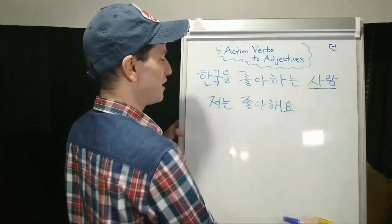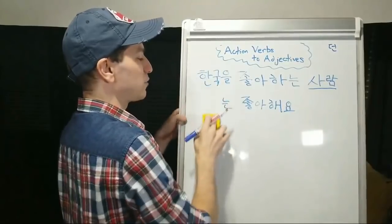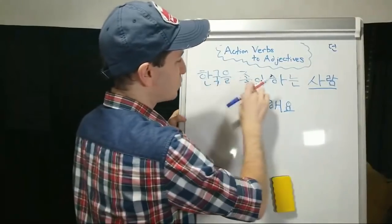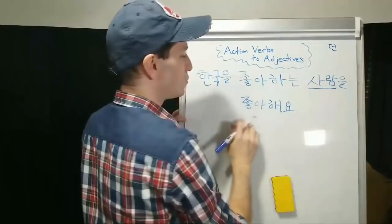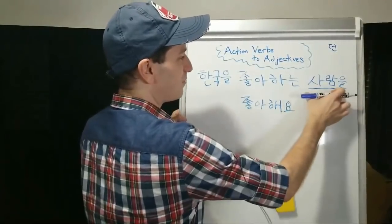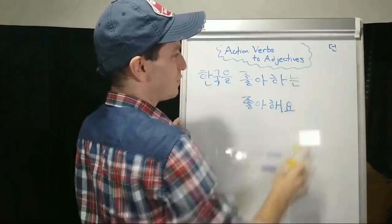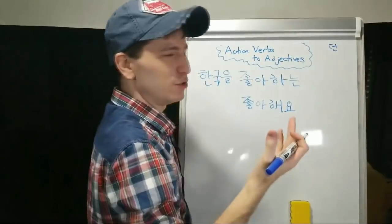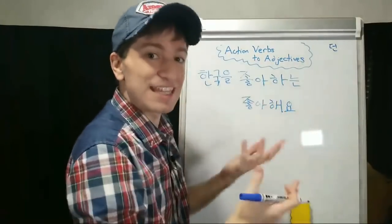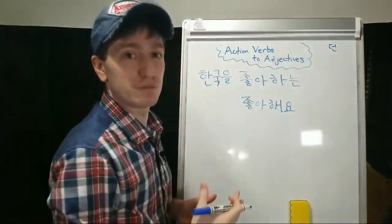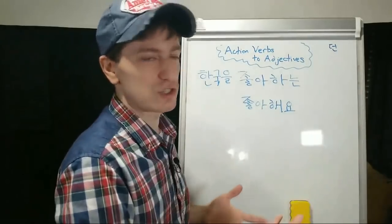Korea-liking person — 좋아해요. We can stick 저는 at the beginning of the sentence: 한국을 좋아하는 사람을 좋아해요 — I like people that like Korea. Or you could even say I like fish who like food. You can say anything you want just by switching around the verbs and the nouns.